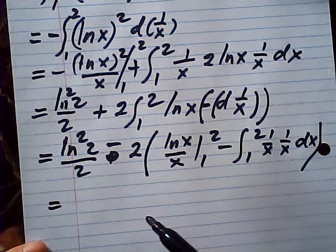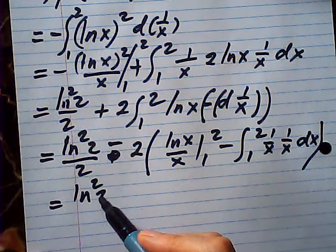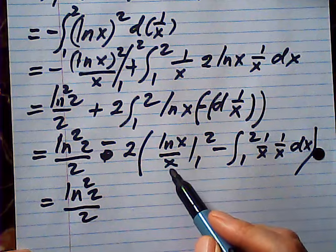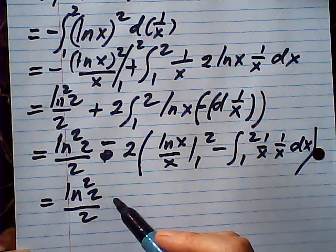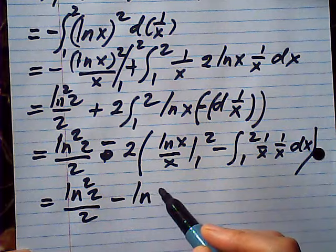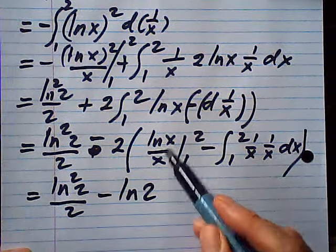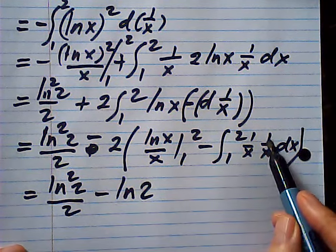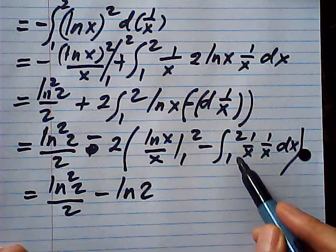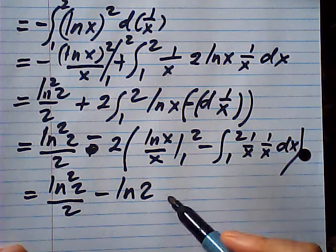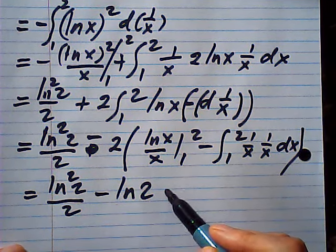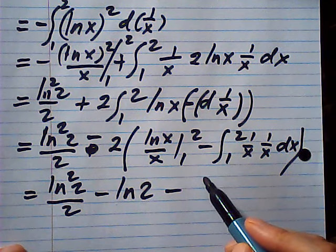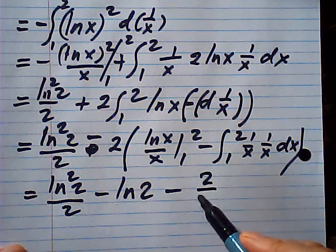So, finally we have this. This is log squared 2 over 2. This will be log 2 over 2, right? So, it becomes log 2. 0, 1. 1 is log 2. And this is negative 1 over x. So, it becomes negative positive. Negative again. So, negative 2 over x.